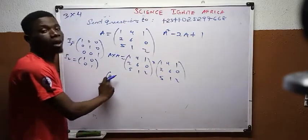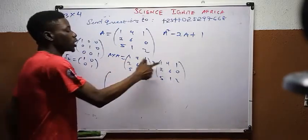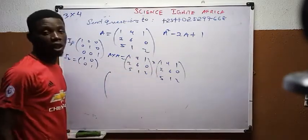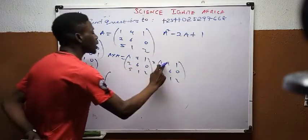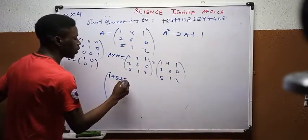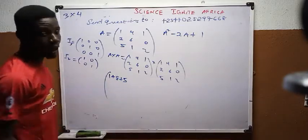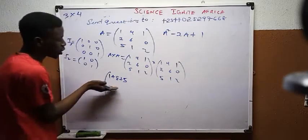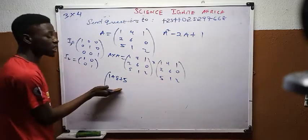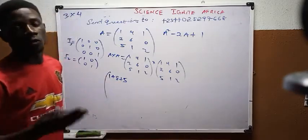For position row 1, column 1: pick row 1 from the first matrix and column 1 from the second, matching entries positionally. So: 1×1 = 1, plus 4×2 = 8, plus 1×5 = 5. I can choose to move downward or to the right. Moving downward takes me to the next row while staying in the same column — from row 1 to row 2.